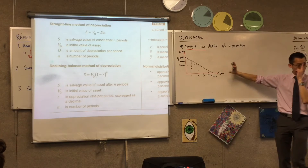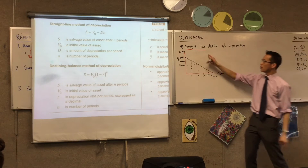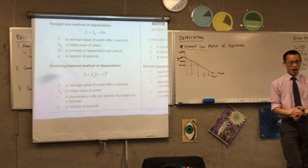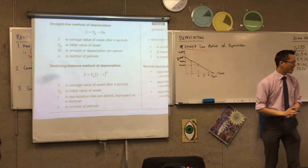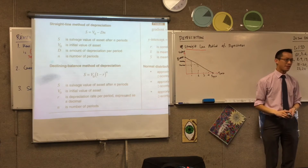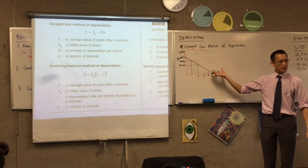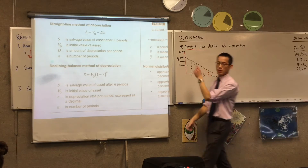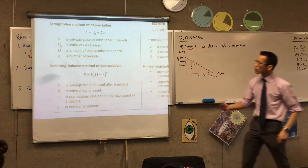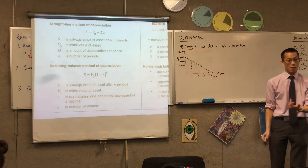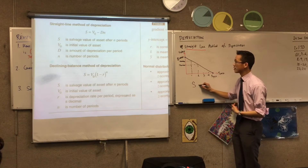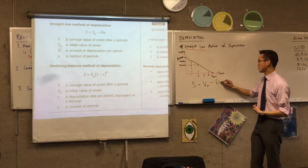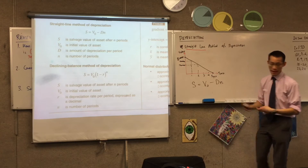Now this picture tells you why this is called what it is and gives you a great image of what is happening, but I don't always want to have to draw a picture. A lot of this is very predictable, so that's why there is a formula. So have a look at this formula with me — you might want to write it down as well. S equals V naught minus D times N.